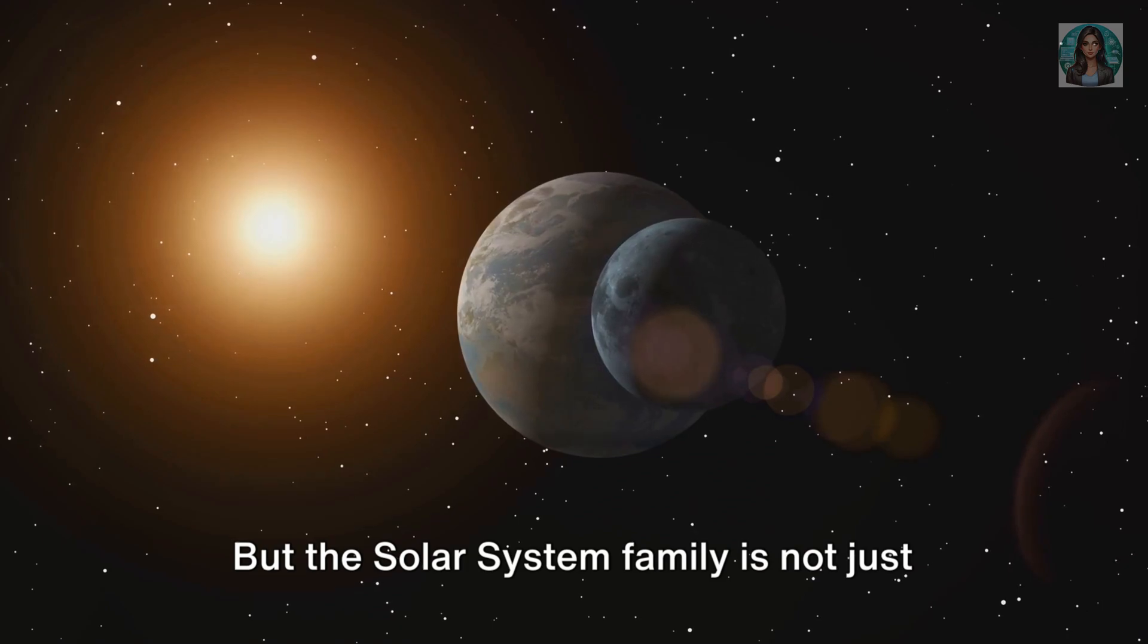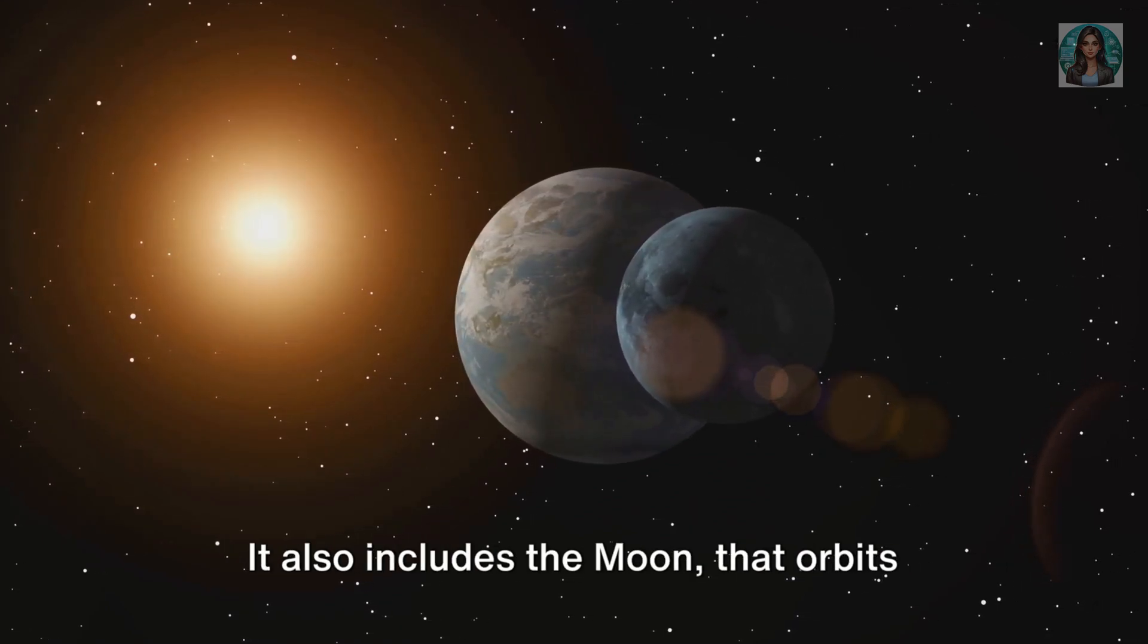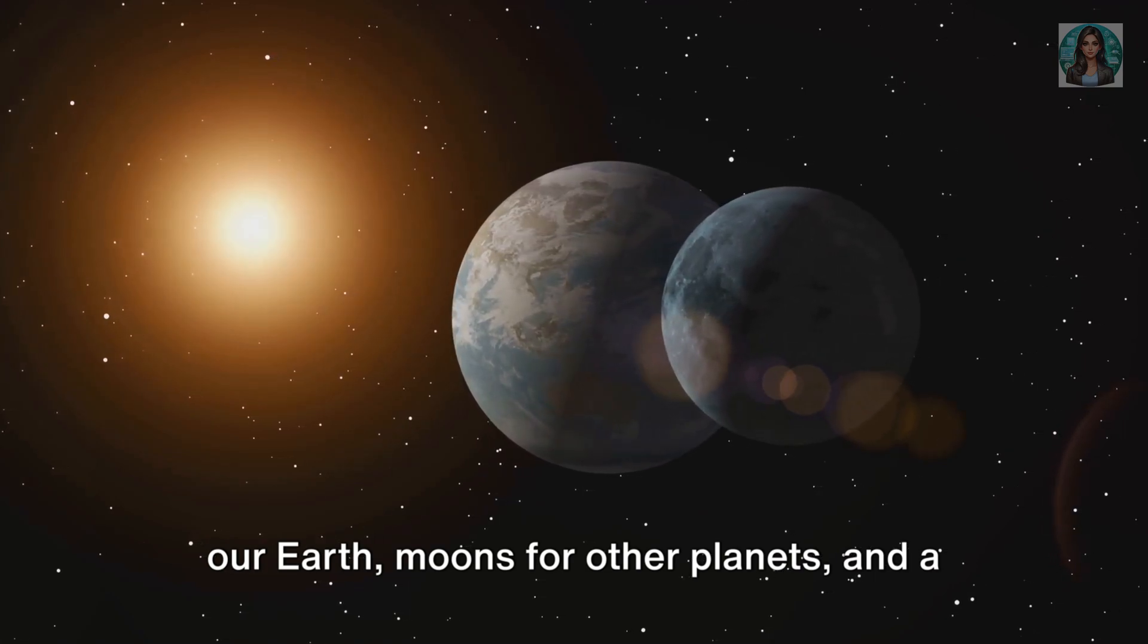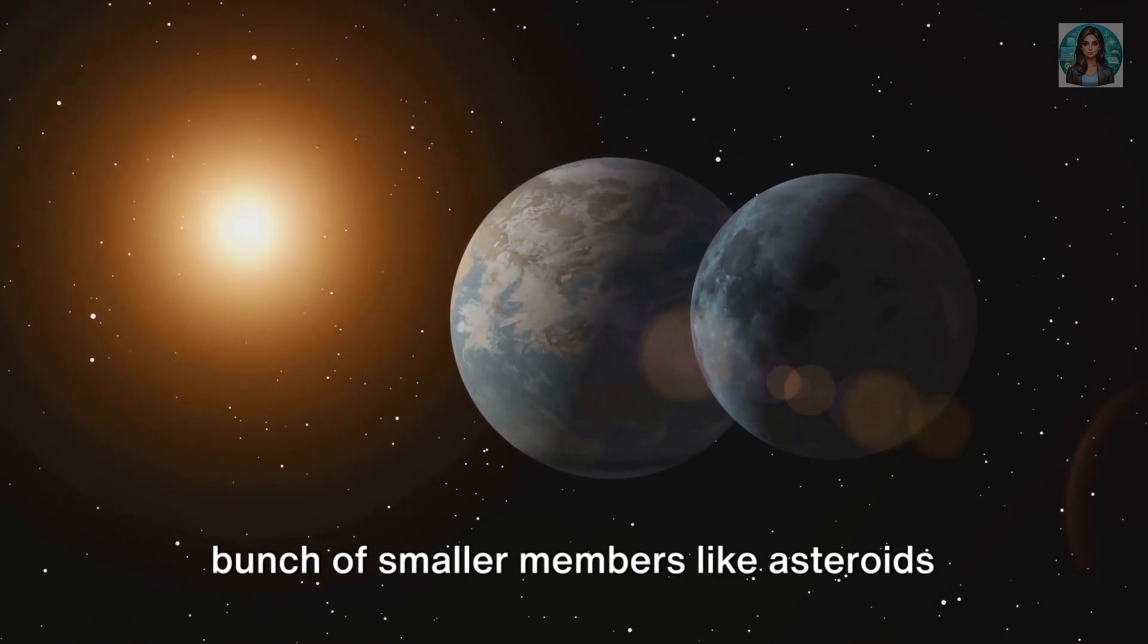But the solar system family is not just about the sun and the planets. It also includes the moon that orbits our Earth, moons for other planets, and a bunch of smaller members like asteroids and comets.